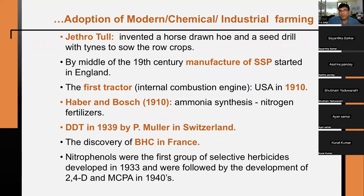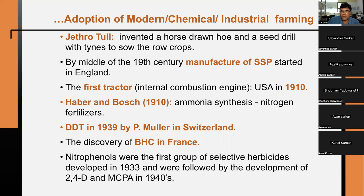The first internal combustion engine in the USA came in 1910. Haber and Bosch in 1910 achieved ammonia synthesis, leading to nitrogenous fertilizers. DDT came in 1939, discovered by Müller in Switzerland. BHC was discovered in France. Nitrophenols were the first group of selective herbicides, developed in 1933, followed by 2,4-D and MCPA in the 1940s. These developments helped expand chemical and modern farming.